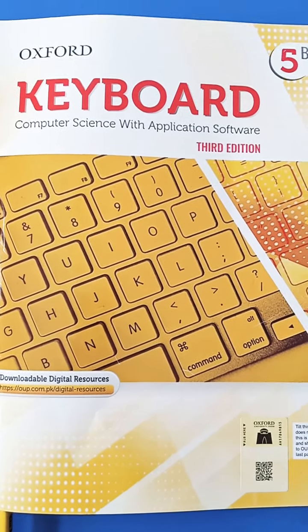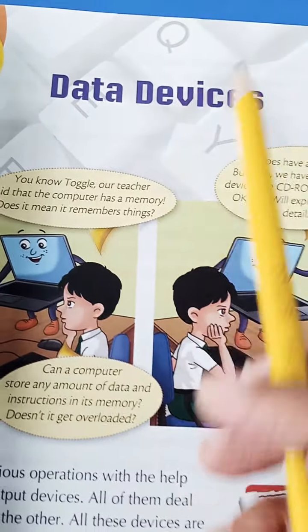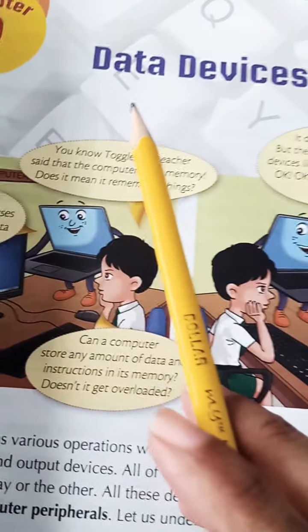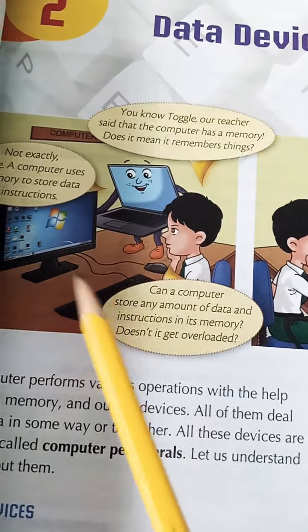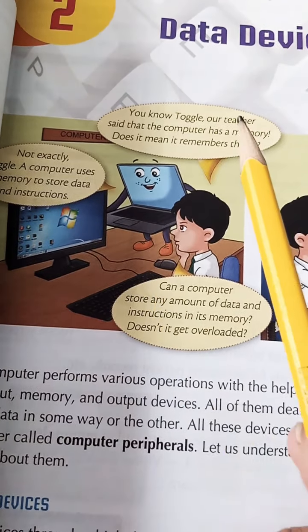So beta, open page number 13. We are on page number 13. Beta, write date and day over here. Chapter number 2 is data devices. You know the characters of these, Toggle and Goggle.